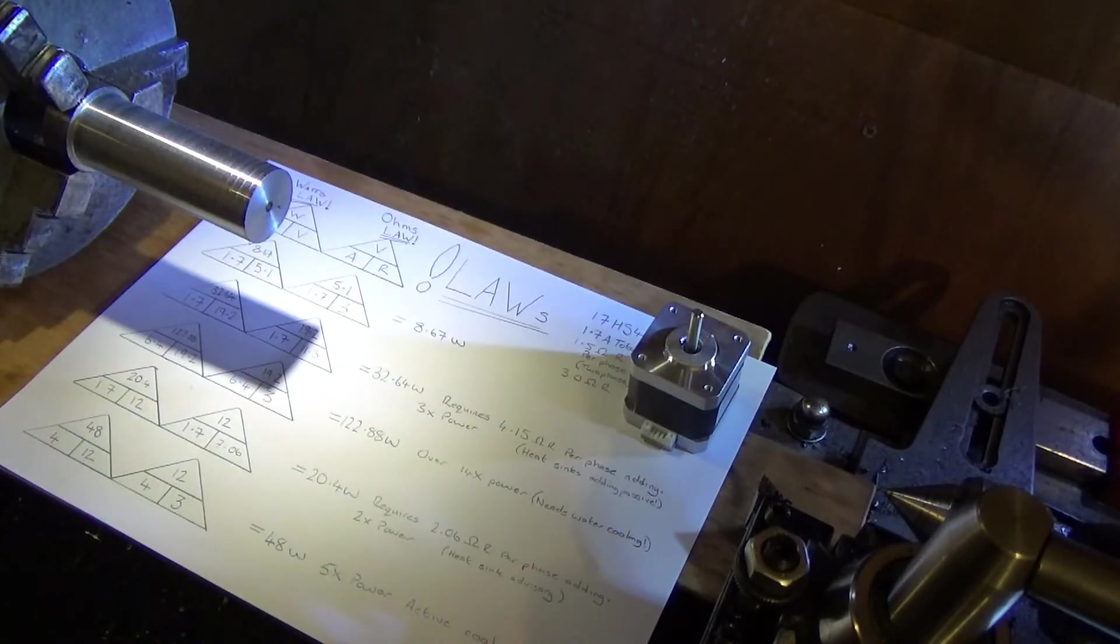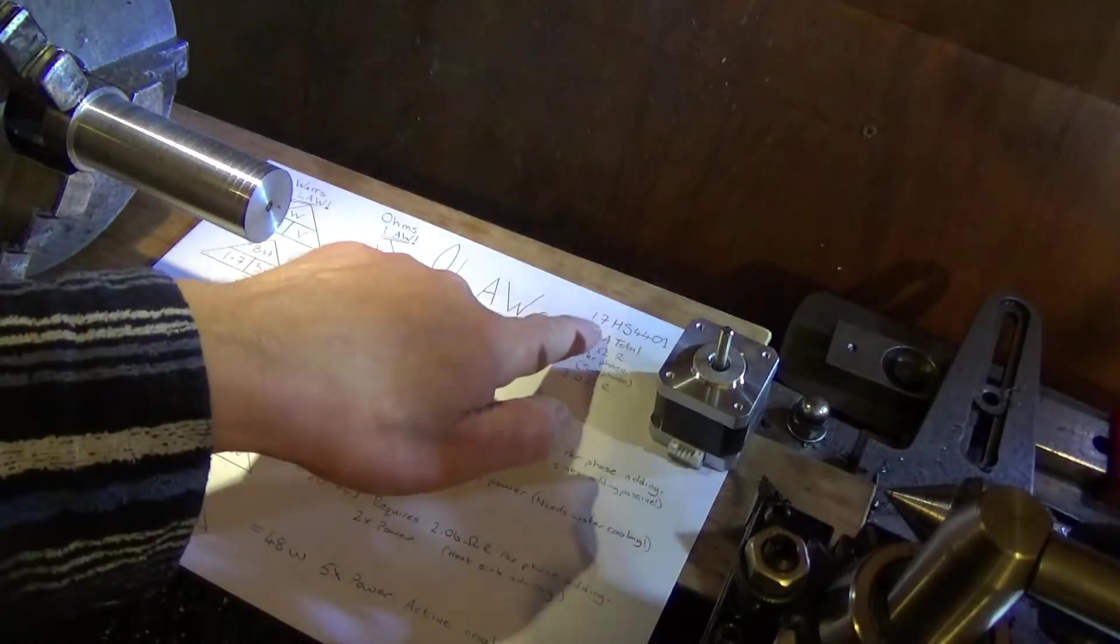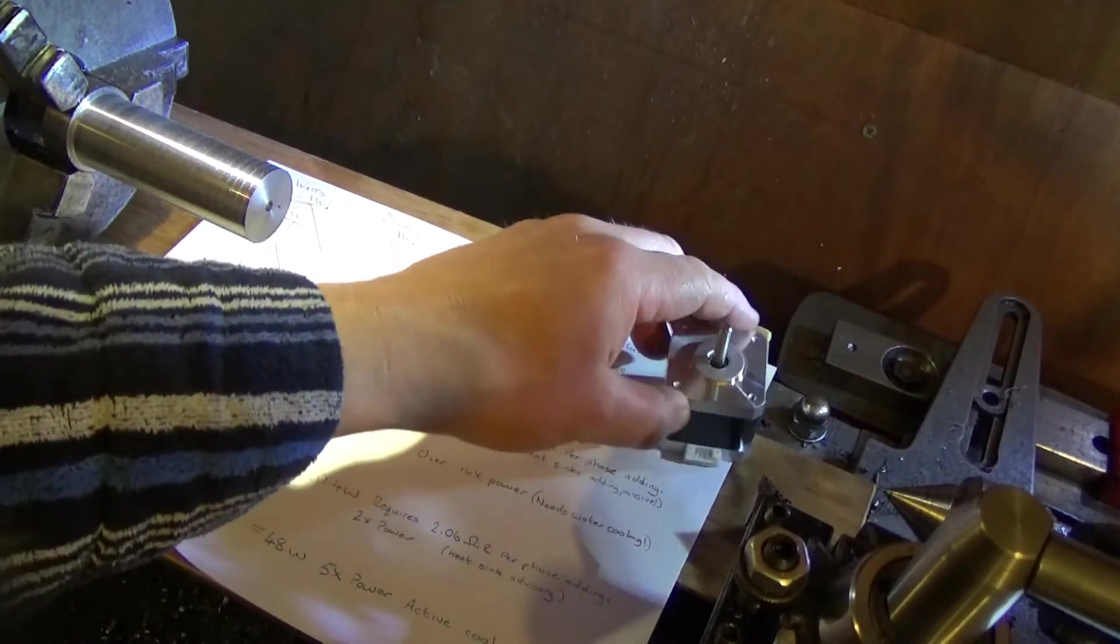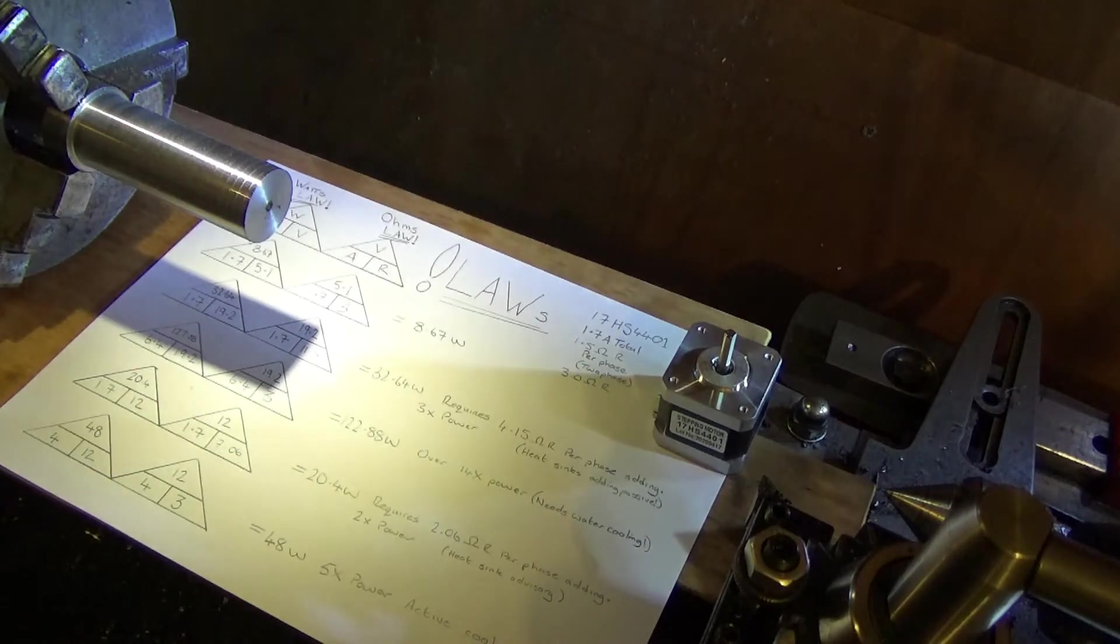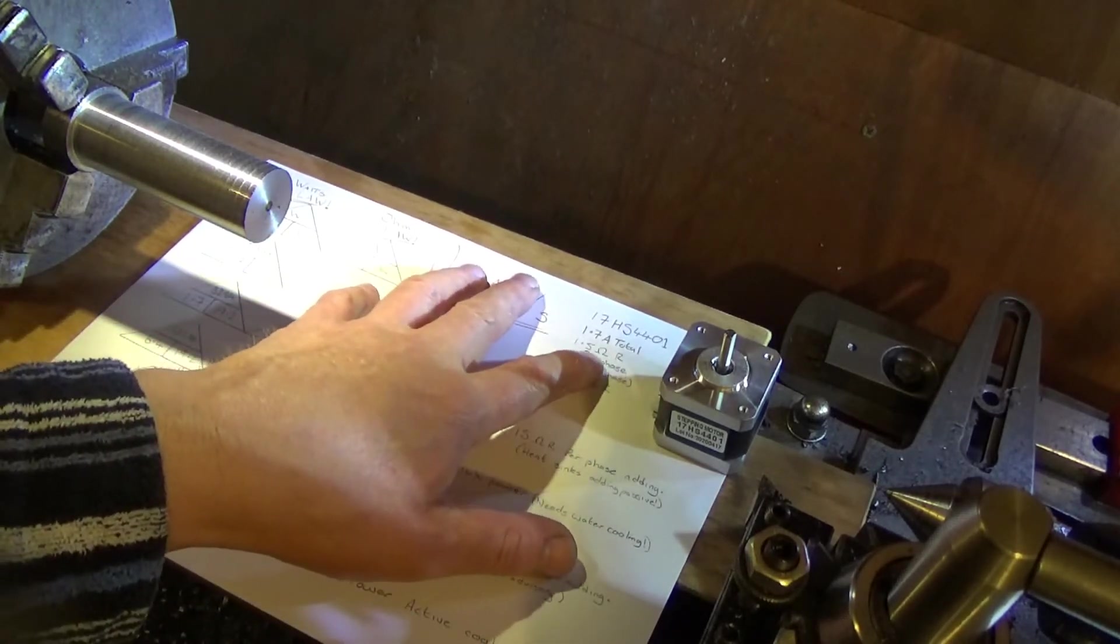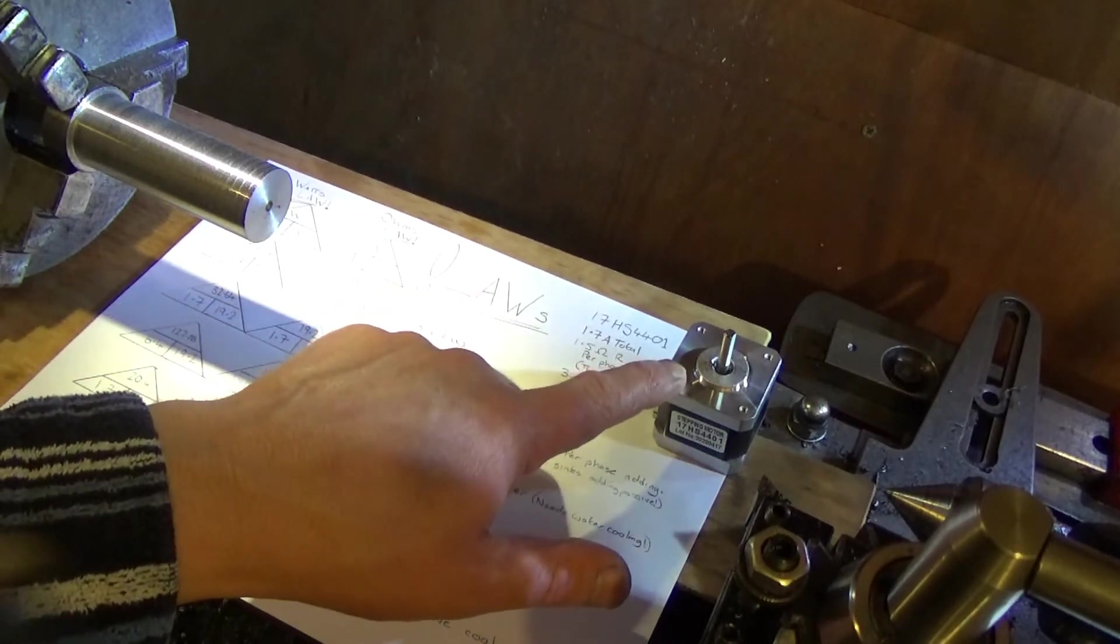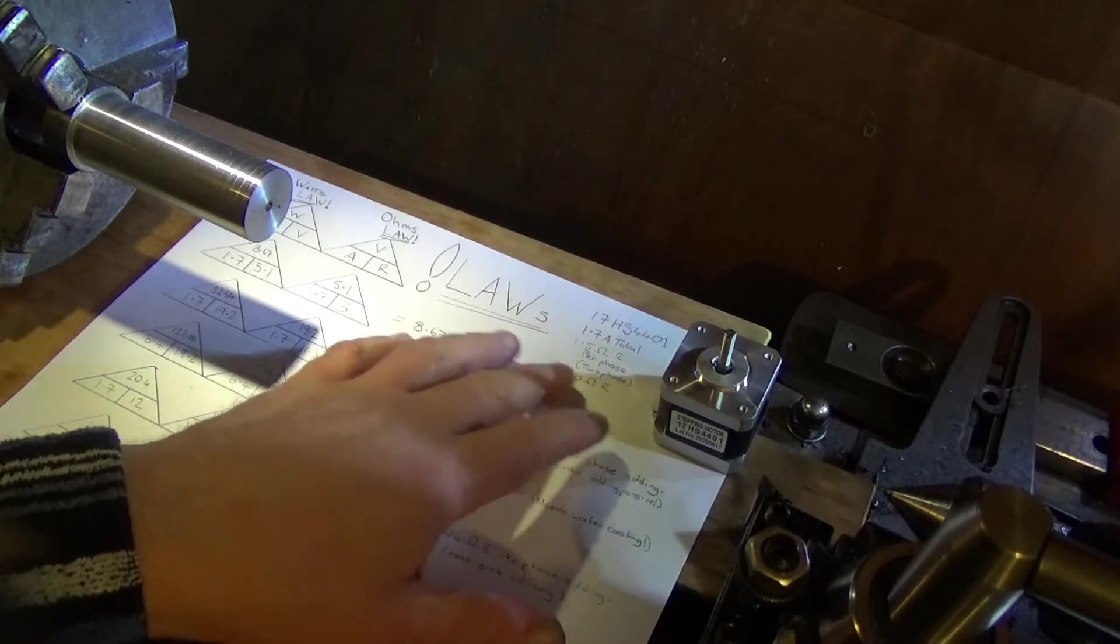Let's get a better angle for you. Can you read it? So this is a 17HS4401. We've confirmed that. Then we looked at the website and we saw it's got a 1.7 amp total and it's got 1.5 ohms of resistance per phase. Now it's a two-phase hybrid stepper motor, so that means there's going to be 3 ohms of resistance total.